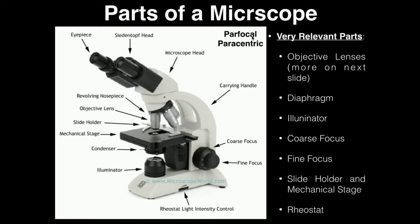First is the fact that this microscope is what we call parfocal. So what does parfocal mean? We have these objective lenses here, and they have different magnifications, and we can rotate through them and increase the magnification. If a microscope is parfocal, that means that if you have your specimen in focus under one of these lenses and you rotate to the next lens, it should still be in focus. You may have to adjust the fine focus a little bit, but parfocal just means when you switch between objective lenses, you should still be in focus on the specimen.